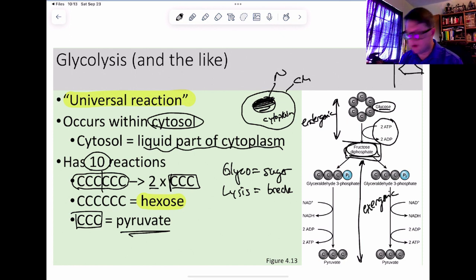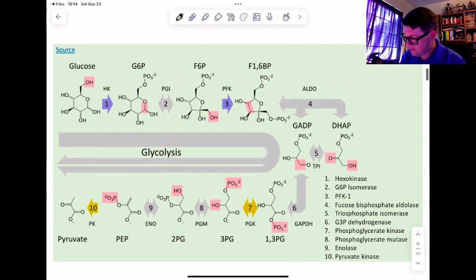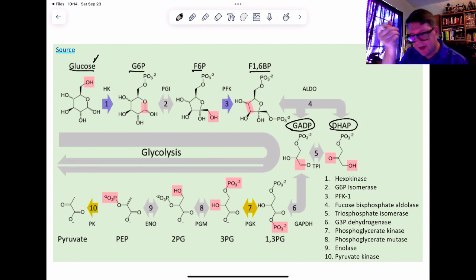We're going to take fructose-1,6-bisphosphate, chop it in half, and turn each of those pieces into a pyruvate. We add a phosphate onto glucose, turn glucose into fructose, add another phosphate onto the fructose. We're going to slice it in half. When we do, we get two different three-carbon molecules. They are not the same, so we need to turn one of them into the other, just a slight rearrangement to make them look the same.